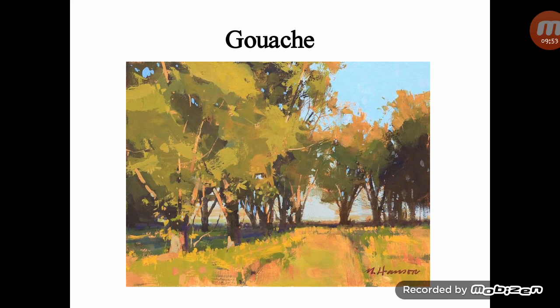Wash, also known as gouache or body color, is a water-based paint consisting of pigment used in an opaque painting method. It differs from watercolor in that the particles are larger and the ratio of pigment to water is much higher, making it heavier and more opaque with greater reflective qualities.